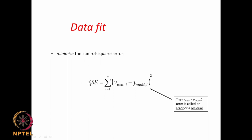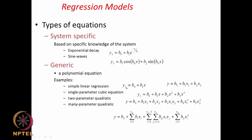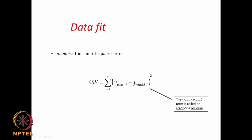The idea is to find all the constants (the b's) by minimizing the sum of squares of the error — the difference between the measured data and what the model predicts. For any given x, the model predicts a y. You take the difference between the measured y and the model-predicted y, square it, and sum over all data points. This is called either the error or the residual.